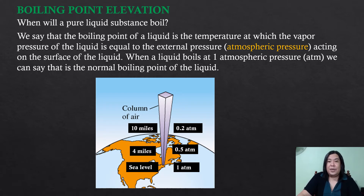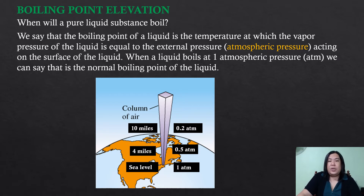At higher altitude, the vapor pressure and the atmospheric pressure equalize faster, so water boils quickly but at a lower temperature compared to lower altitude. At lower altitude, cooking food is easier because the substance boils at a much higher temperature, since it takes longer for the atmospheric pressure and vapor pressure to equalize.